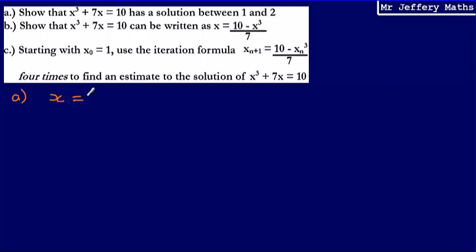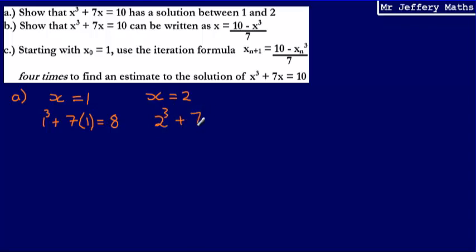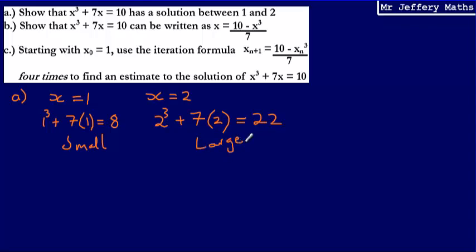We substitute x equals 1 and x equals 2 and show that one answer is too large and one too small. When x equals 1: 1 cubed plus 7 times 1 equals 8 — too small. When x equals 2: 2 cubed plus 7 times 2 equals 8 plus 14 equals 22 — too large. Therefore x has a solution between 1 and 2.